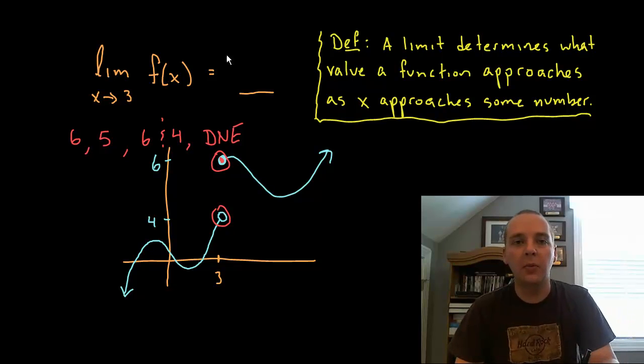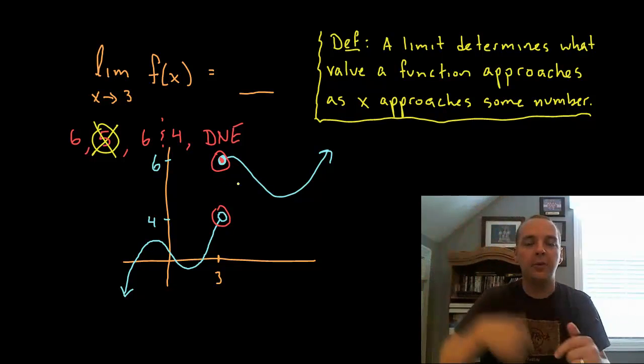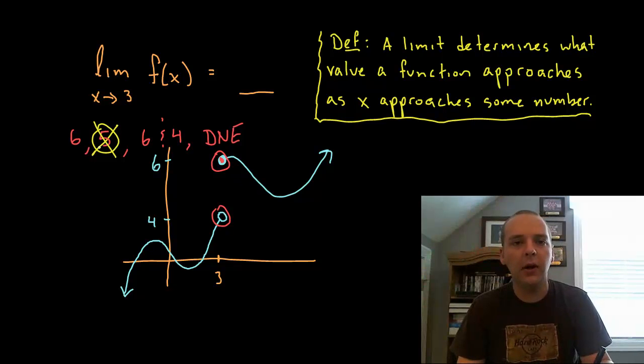Now one of these four options is correct, let me start knocking them out one by one. The silliest is probably this 5, right, that's not the right answer. A limit determines what value a function approaches. Nothing goes to 5, 5 is big empty space right here, so don't think that if it's kind of halfway between you can average the values out, that's certainly not true.